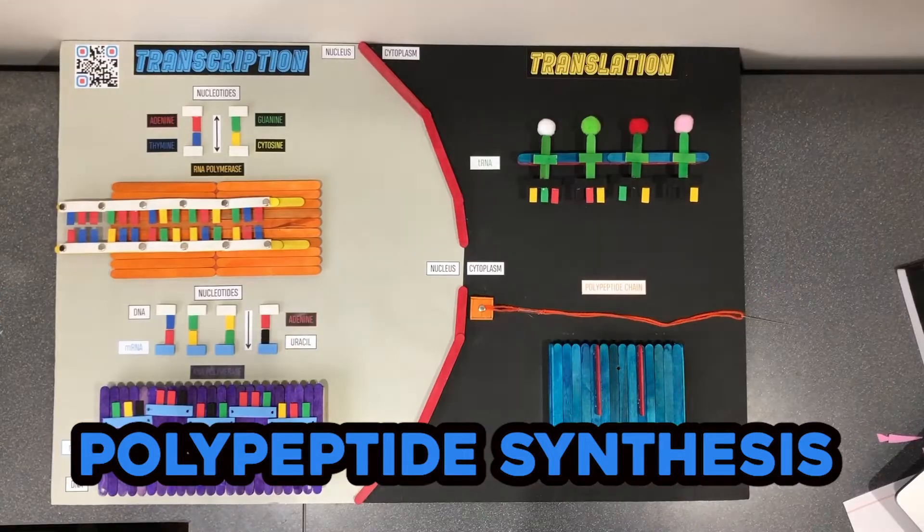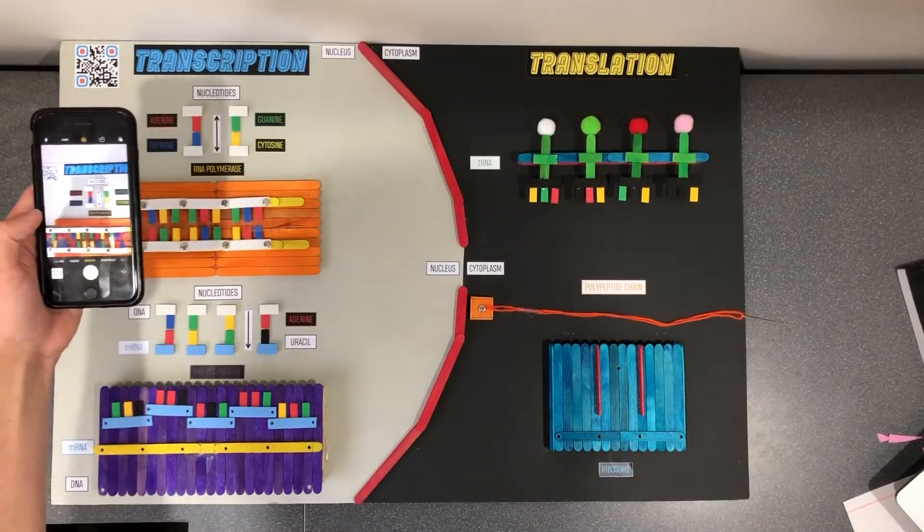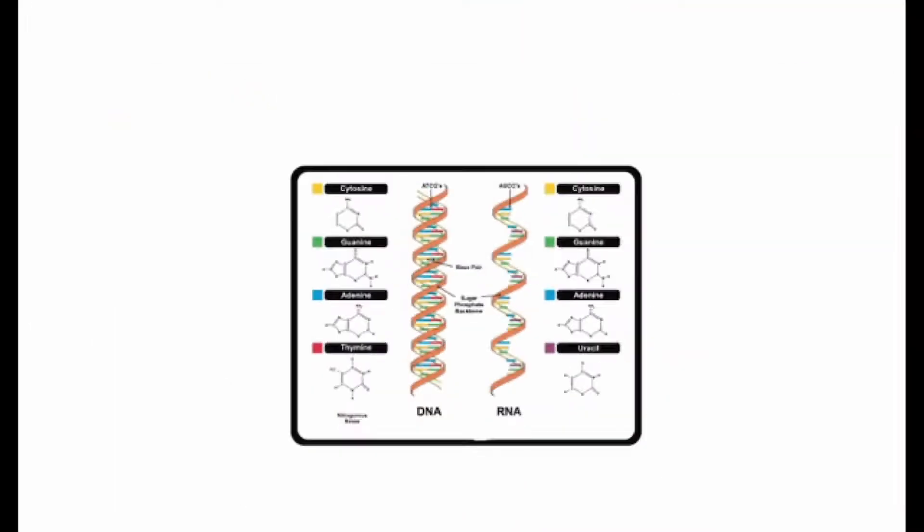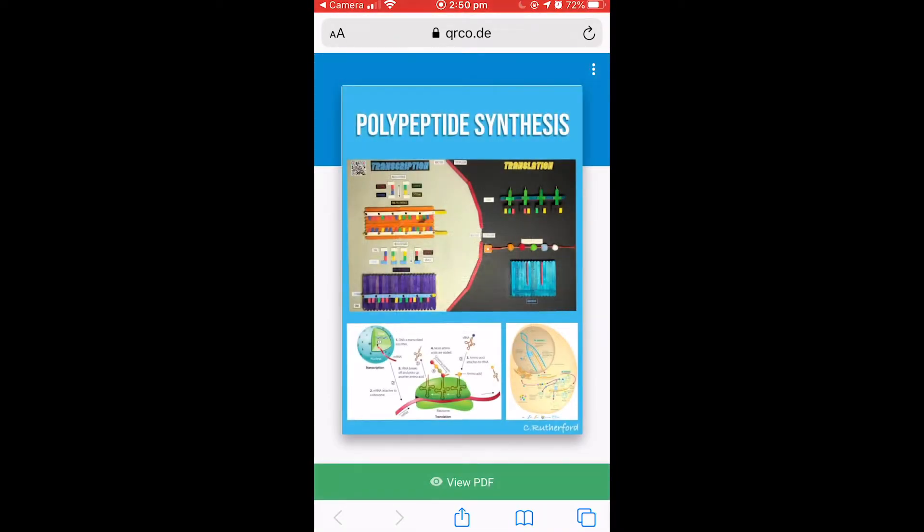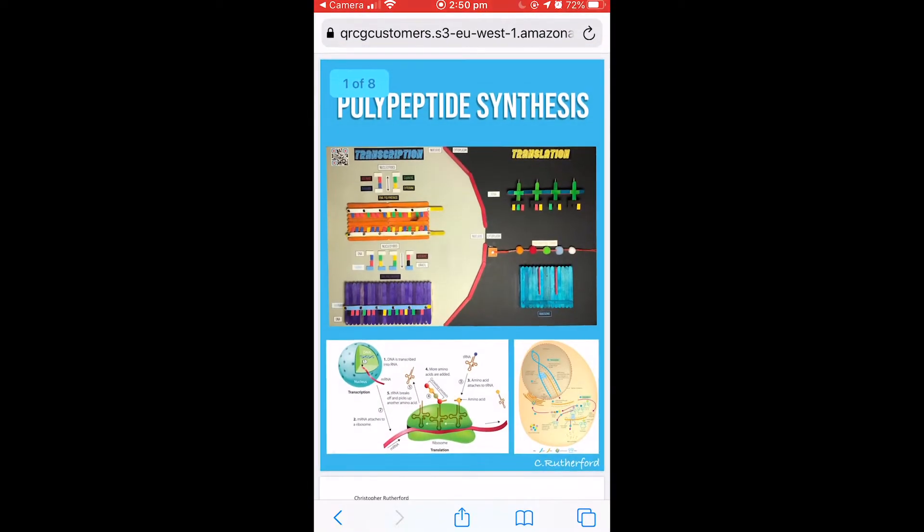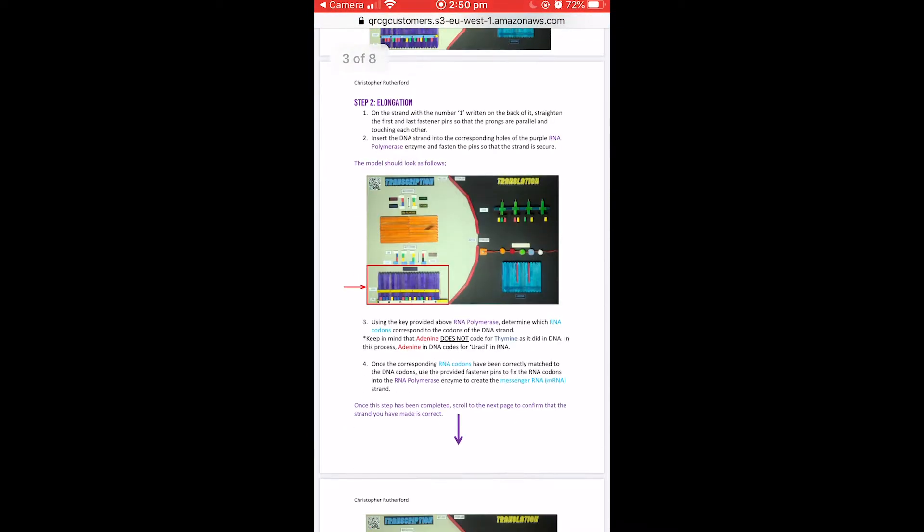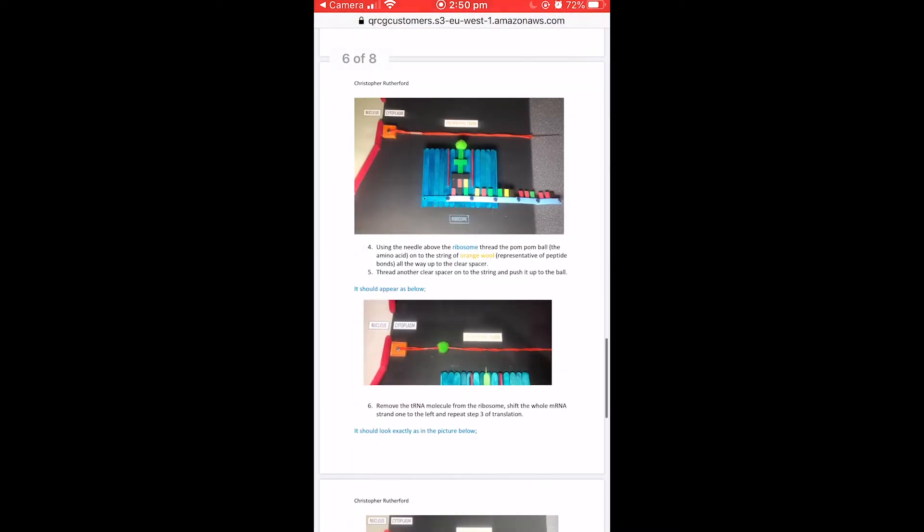Welcome to Polypeptide Synthesis. To begin, responders will scan the QR code in the top left corner using their mobile phone or tablet. This will take them directly to a PDF that has specific instructions and attached images on how to successfully complete the process.